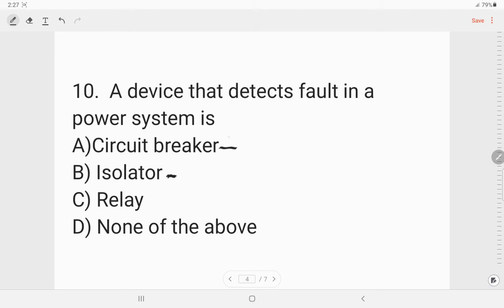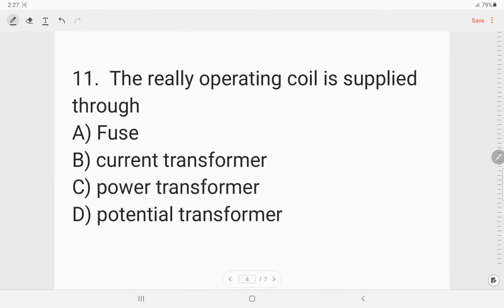These two work only when it receives that a fault has occurred. So the device that detects fault is always a relay. Next, the relay operating coil is supplied through a current transformer option B.